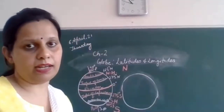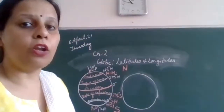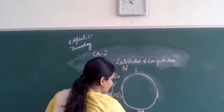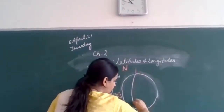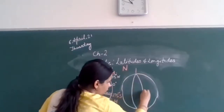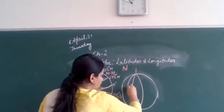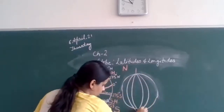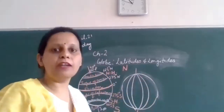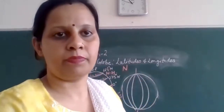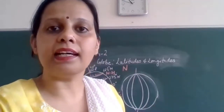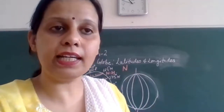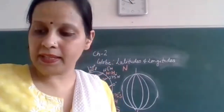Longitude runs from the North Pole to the South Pole. Longitudes are not complete circles, whereas latitudes are complete circles. So latitudes are complete circles, but longitudes are not complete circles.